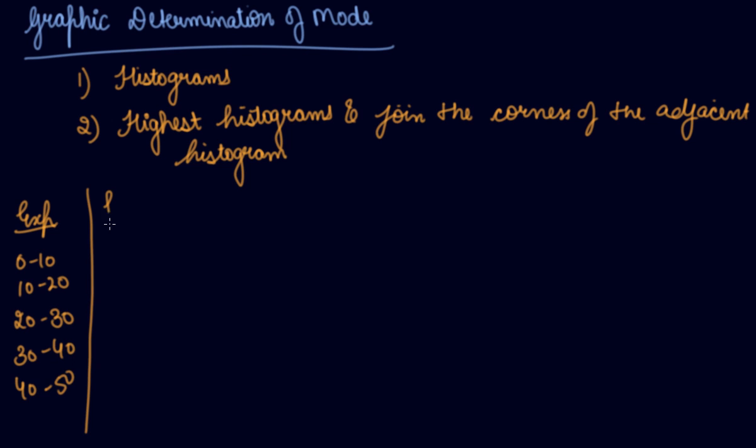The number of families, that is frequency, is given to you: 14, 23, 27, 21, and 15.